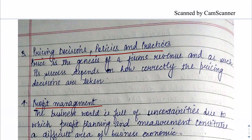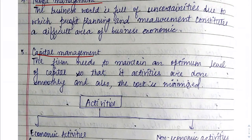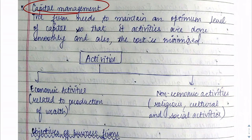Last is capital management — how much money we need to run our firm. We have to maintain an optimum level so that we can minimize our costs. This is the scope of business economics.